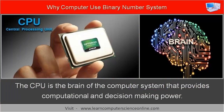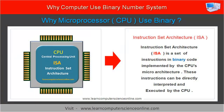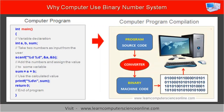The microprocessor effectively functions as the brain of the computer system. The processor chip is designed to implement the microarchitecture, which defines the set of binary operations supported by the processor. Furthermore, computer programs are also required to be converted to binary machine code instructions that the computer processor can directly interpret and execute.